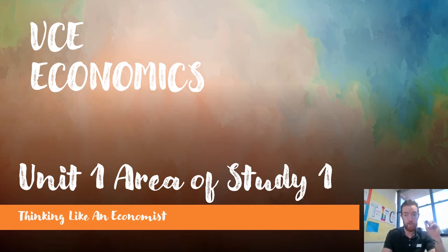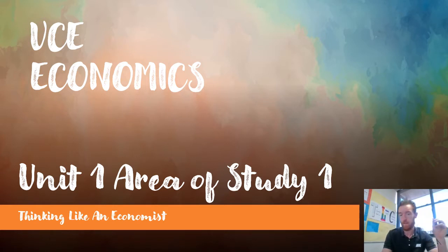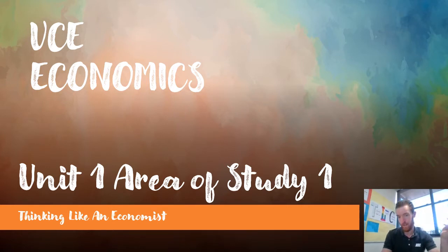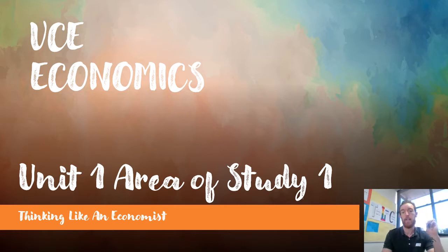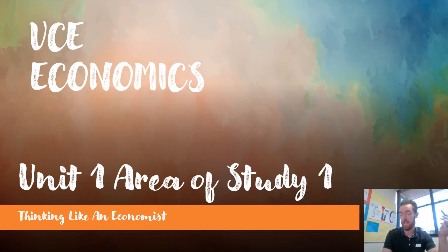Hello everyone and welcome back to our third video for Unit 1, Area Study 1, Thinking Like an Economist for BC Economics. We've already talked about production possibility diagrams, trade-offs, cost benefit analysis, living standards, microeconomics, macroeconomics, positive normative economics, and today we're going to be moving on to the three basic economic questions as well as the two-sector model of economic activity, which is a building block into the five-sector model later in the year and in Year 12.